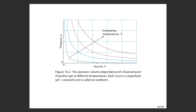At different temperatures, the gas follows different hyperbolas. For high temperature you'd follow one hyperbola; for a low temperature, a different one. These different curves are called isotherms because everywhere along a curve, the temperature has the same value.